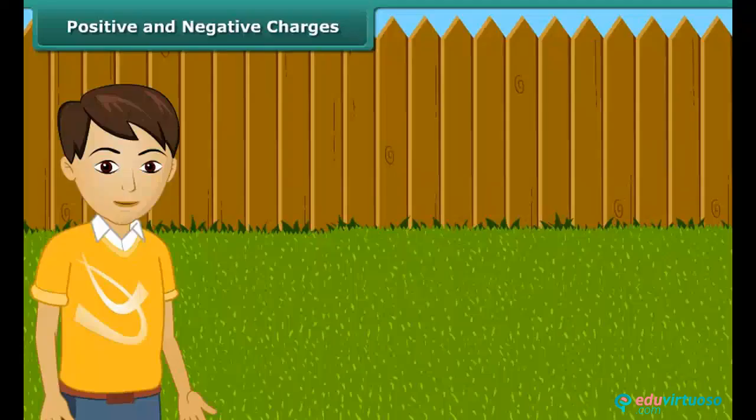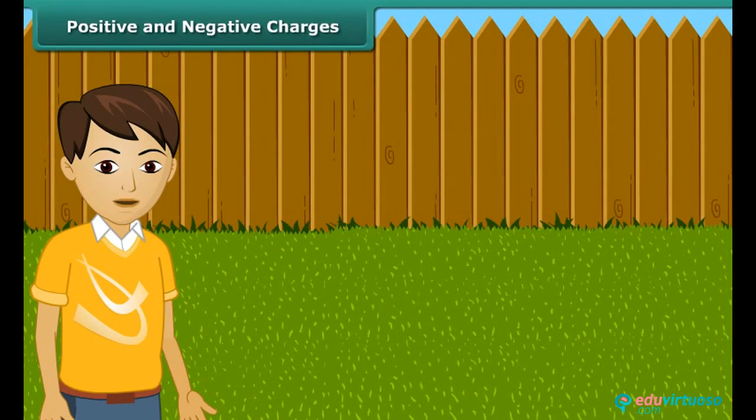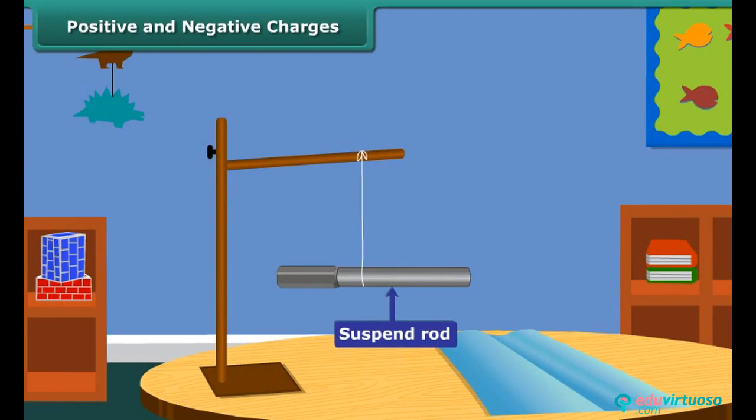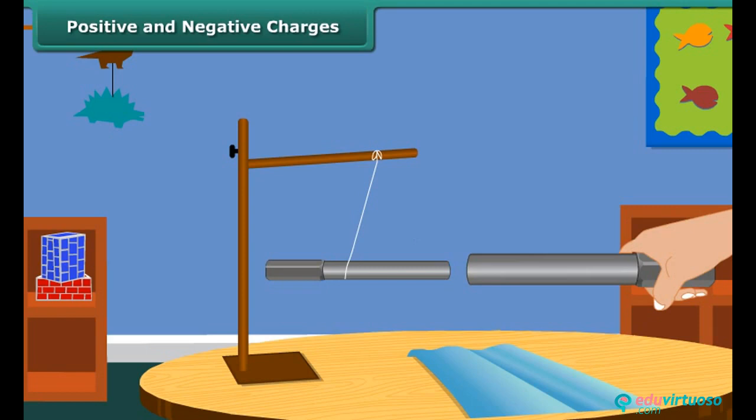Let us perform an activity to understand positive and negative charges. Take an ebonite rod and rub it with a piece of woolen cloth. Now suspend the rod by tying a thread through its middle. Now charge another ebonite rod in the same way and bring it close to the suspended rod. What do you notice? The suspended rod moves away from the second one.